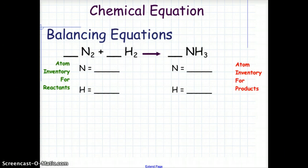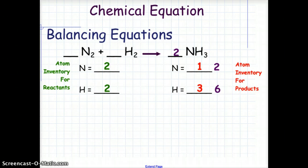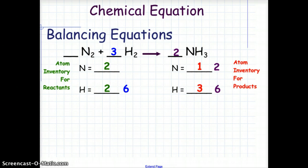First, we do an atom inventory for the reactants and an atom inventory for the products. To begin with, we have 2 atoms of nitrogen and 2 atoms of hydrogen on the reactant side, and 1 atom of nitrogen and 3 atoms of hydrogen in the products. We can change this by placing a coefficient of 2 in front of the NH₃, giving us 2 atoms of nitrogen to balance the reactants. This, however, makes 6 atoms of hydrogen, which are balanced by placing a 3 in front of the H₂ molecule, giving us 6 total atoms of hydrogen. When each side has an equal amount of atoms, due to the law of conservation, we now have a balanced chemical equation.